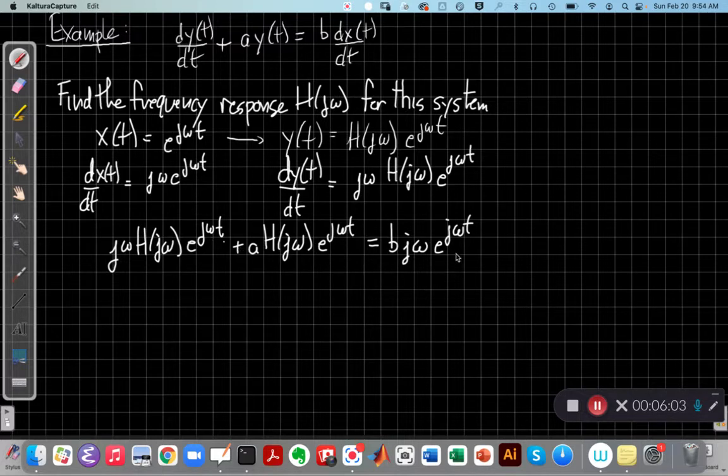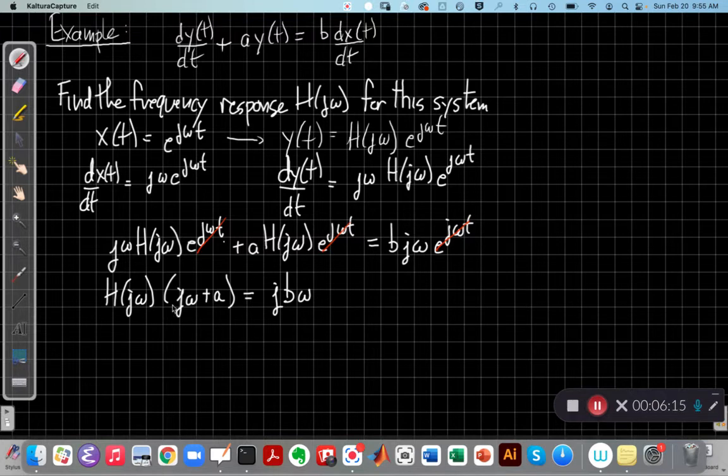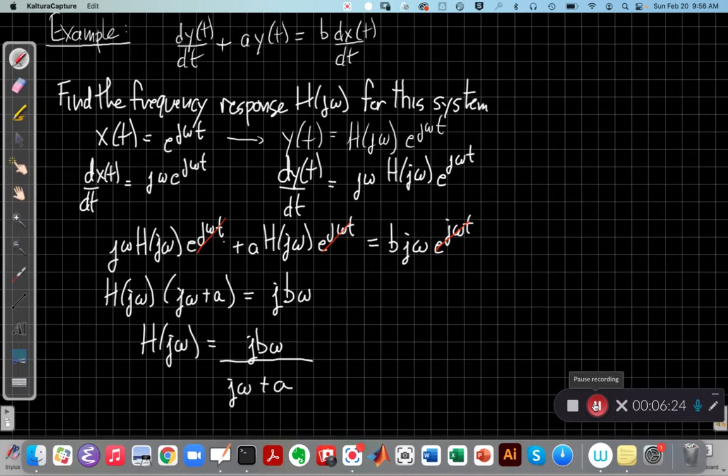We have e^(jωt) in every term in this, so let's cancel. And then on the left hand side, we can factor the H(jω) out and see what we have left. I have H(jω) times - I factored this out - I have jω + a on the left hand side. I'm going to divide that over and get my answer for H(jω). So there's our frequency response for this simple differential equation: H(jω) = jbω/(jω + a).